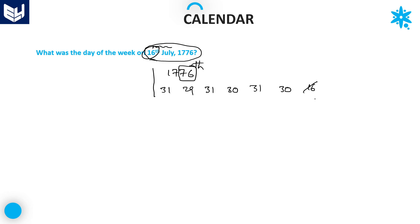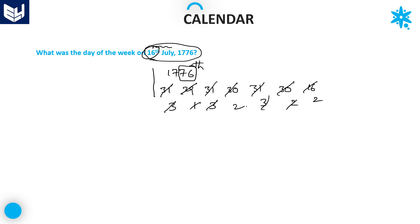Now computing odd days for the right-hand side: January gives 2 odd days (2 weeks plus 2 extra), February gives 1 odd day (4 weeks plus 1 extra), March gives 3 odd days, April gives 2 odd days, May gives 3 odd days, June gives 2 odd days, and July 16 gives 2 odd days. Cancelling groups of 7: 3 plus 3 plus 1 cancel, then 3 plus 2 plus 2 cancel, leaving 2 on the right-hand side.